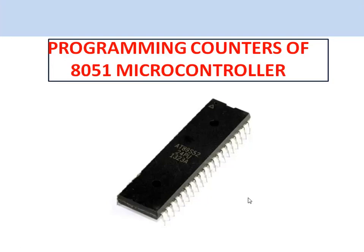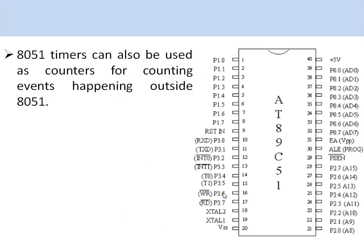In this video I will discuss how to program the timers in the 8051 microcontroller for counting applications. 8051 timers can also be used as counters for counting events happening outside the 8051. This microcontroller has pins P3.4 and P3.5 which correspond to Timer 0 and Timer 1. When these timers are configured as counters, these pins are connected to the external event application.